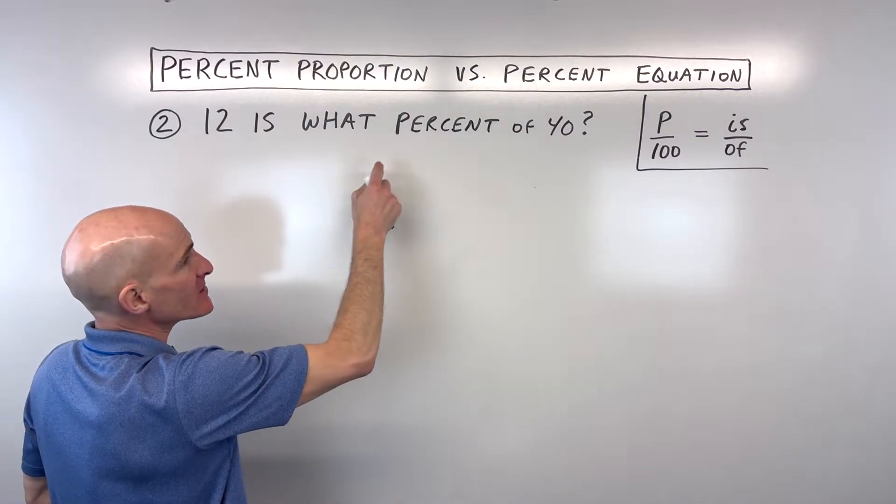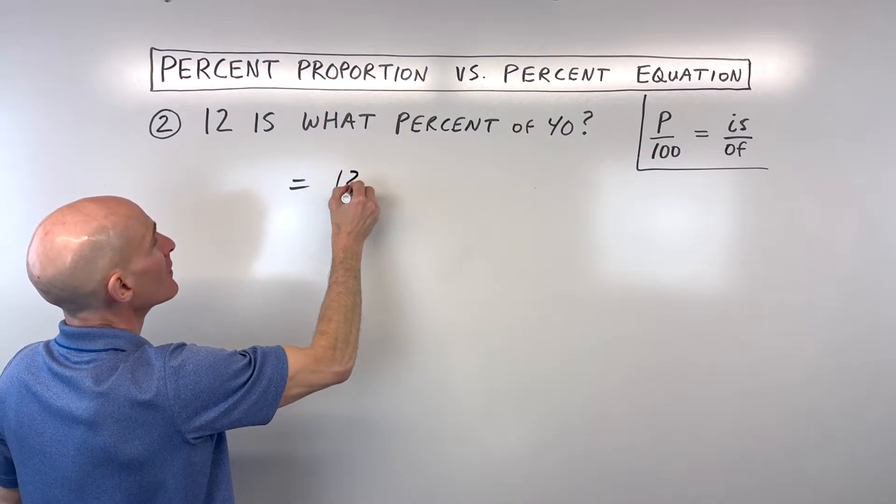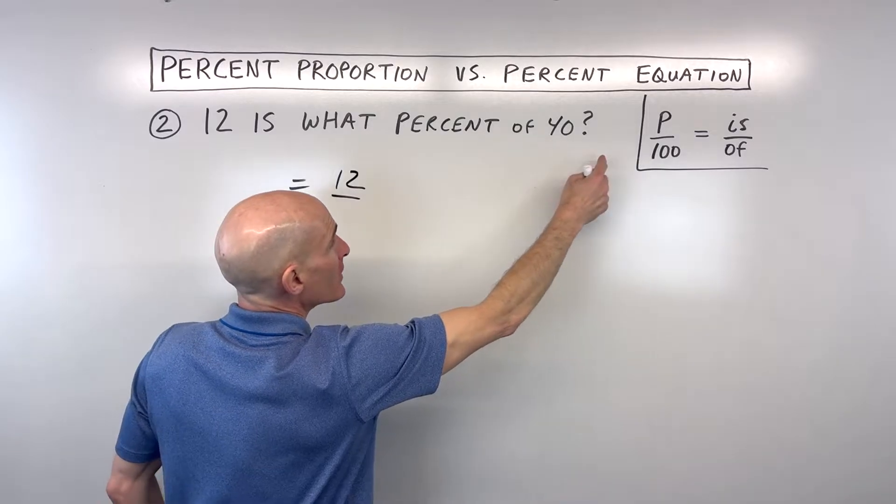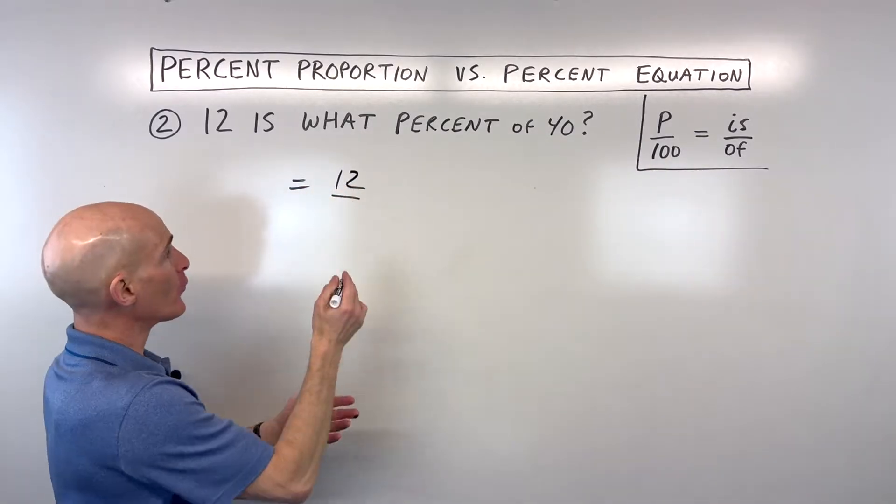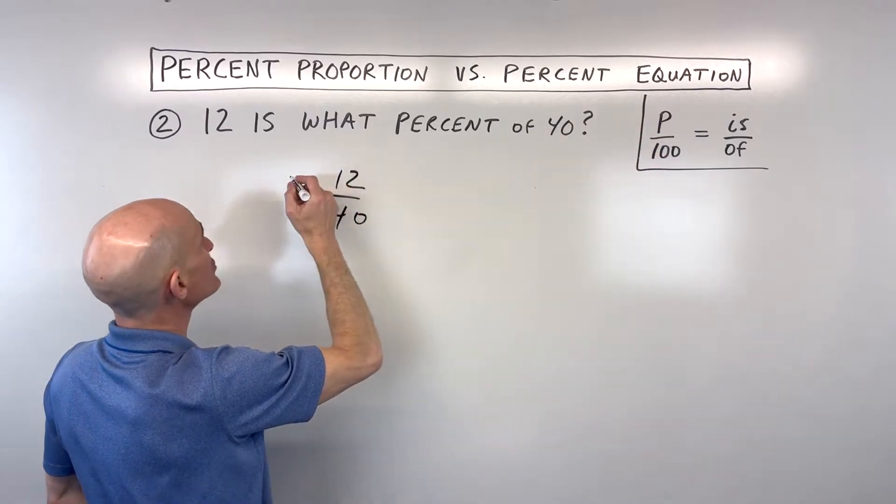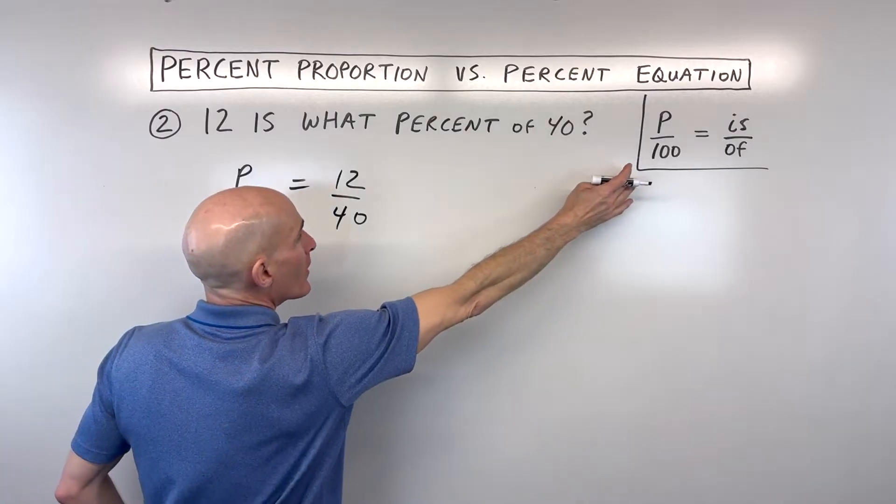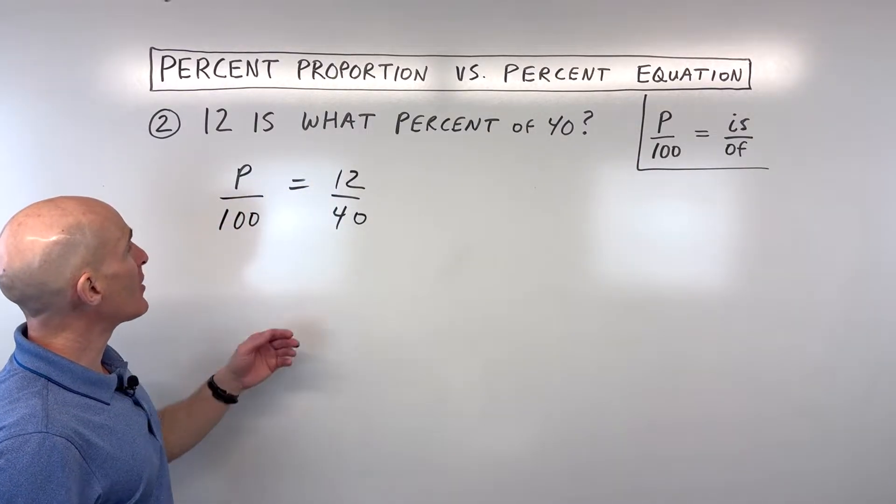So 12 is, that's the numerator, of 40, that's the whole, so out of 40. What percent, we don't know the percentage, so let's just call that p for percent. And this is our 100. So all we need to do now is solve for p.